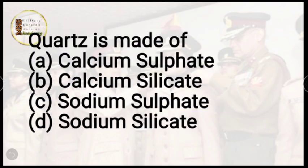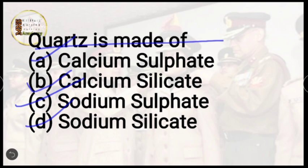Question number 7: quads is made of which of the following? Options are calcium sulfate, calcium silicate, sodium sulfate, or sodium silicate. The correct answer is option C, sodium silicate.